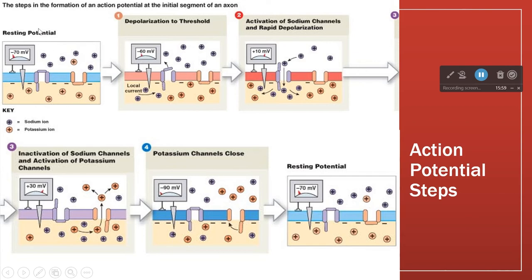A neurotransmitter is released, and an area of membrane becomes depolarized. When we get to the threshold of the cell, that depolarization causes the sodium gate to activate. This depolarization is also going to trigger the closure of the inactivation gate and the opening of the potassium gate — but those happen later; there's a delay on that.